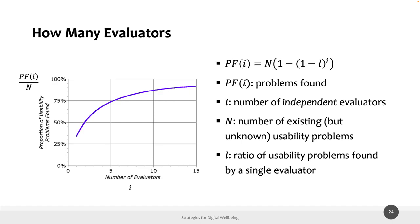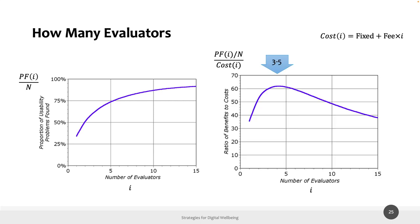With three to five evaluators you have already found most of the problems. There is also a chart that compares the number of evaluators with the proportion of usability problems found. This ratio is quite linear at the beginning but drops after five evaluators — at that point you've already found about 75% of problems. If you double the number of participants, you only get a small additional benefit in terms of problems found, and there is also the cost of recruiting more participants. So the magic number is probably five.